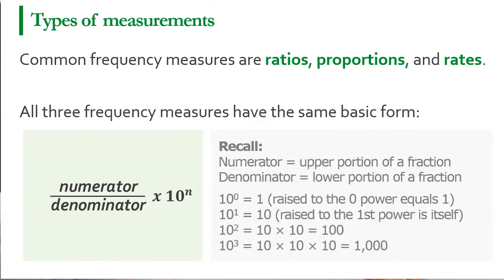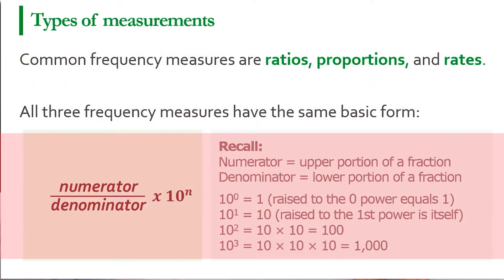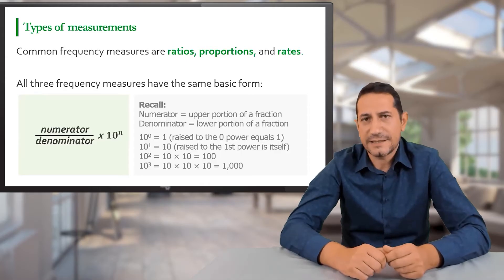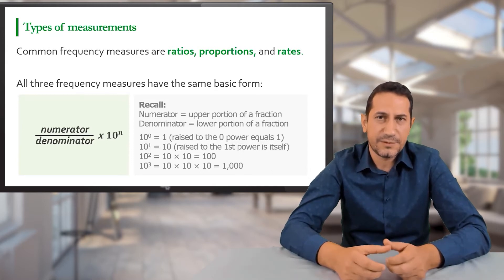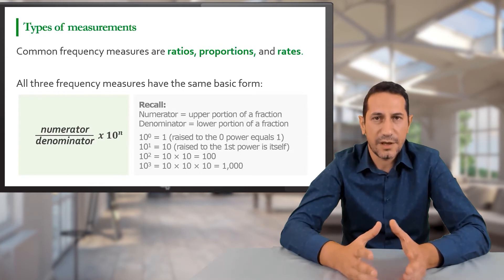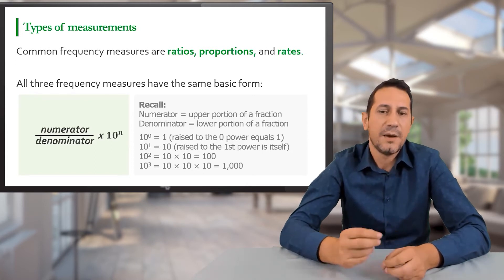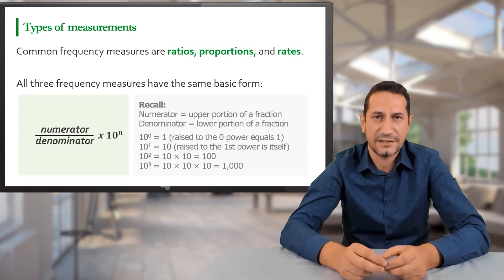The types of measurements can be mathematically divided into ratios, proportions, and rates — and all three are basically fractions. The fraction is composed of a numerator, a denominator, and a multiplier. The multiplier puts the fraction into the context of a population — for example, per a thousand, per a hundred thousand, or per a million animals — and it is adjusted depending on the measure in question, as we will see when we discuss incidences, prevalences, and other risk measures.